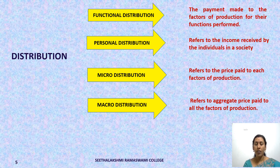The concept of distribution is further classified into four types: functional distribution, personal distribution, micro distribution, and macro distribution. Functional distribution is the payment made to the factors of production for the functions performed. In functional distribution, we calculate how the rent of land, wages of labor, interest of capital, and profit of entrepreneur are determined according to their marginal productivity and the functions performed by each factor of production.